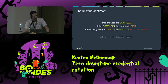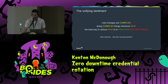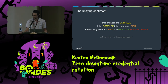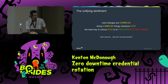Here's the unifying sentiment: credential changes are complex. Doing complex things introduces risk of downtime, which means loss of money. The best way to reduce risk is to not do things — so we should never rotate anything ever once we create it? No. The obvious answer is we should be practicing. So why don't we just practice?